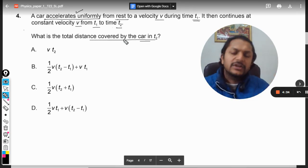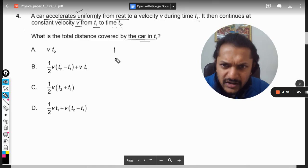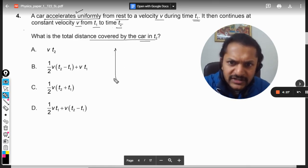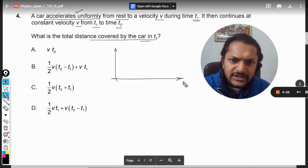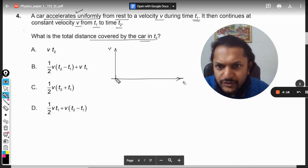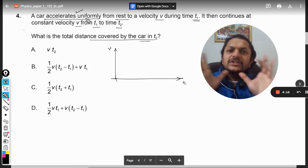So what is happening? Let us make a graph here just to make it even more elaborate for ourselves. I'm taking time t on this scale and we are taking velocity here. So initially it was at rest, so it has to start from zero.